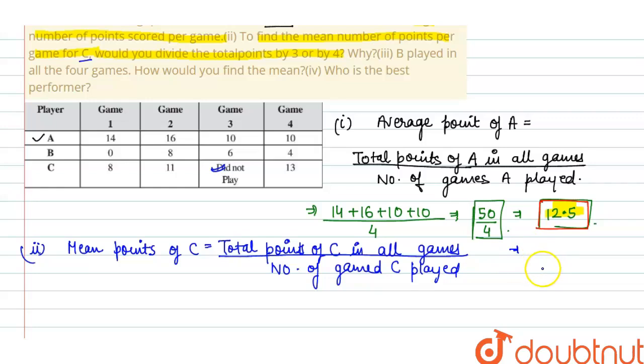We divide the total because it is 3, and total points are 8 plus 11 plus 13. We will divide this because it is asking in the question, would you divide the total points by 3 or 4? We will divide it by 3 because the total games are 4, but C has not played one game. So we will divide it by 3. He played total 3 games only.